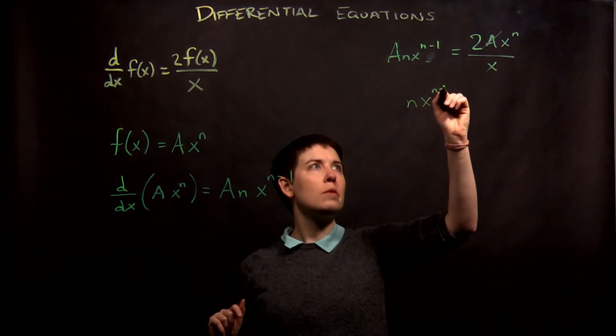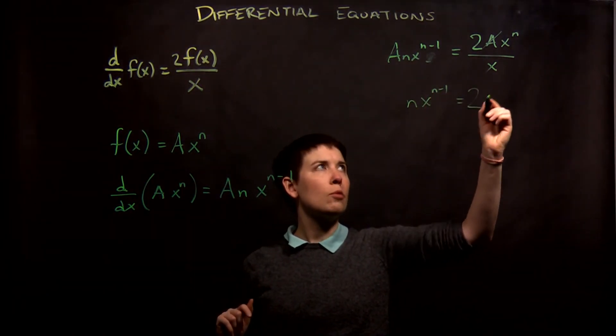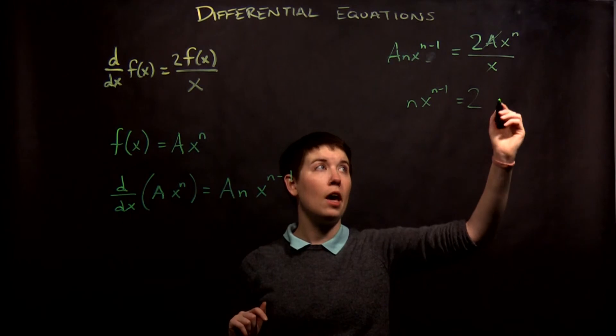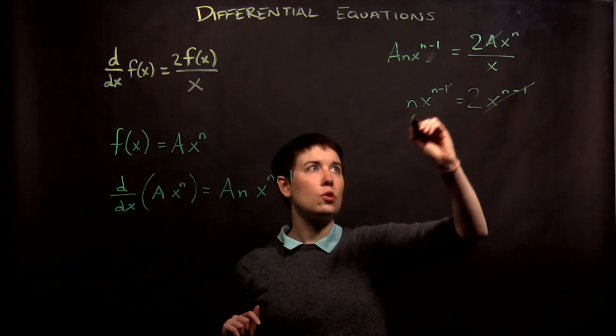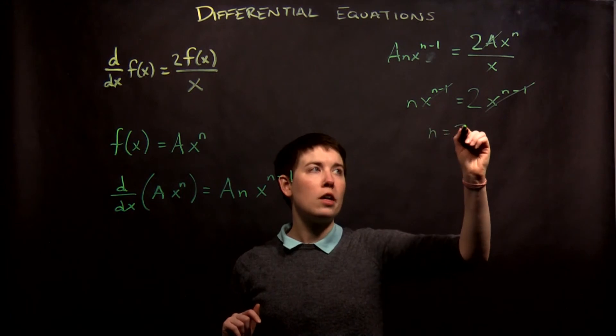And so I'm now left with n, x to the n minus 1. But now look what's happened over here. I have x to the n divided by x. That's the same as x to the n minus 1. Cool, that cancels too. We are left with n equals 2.